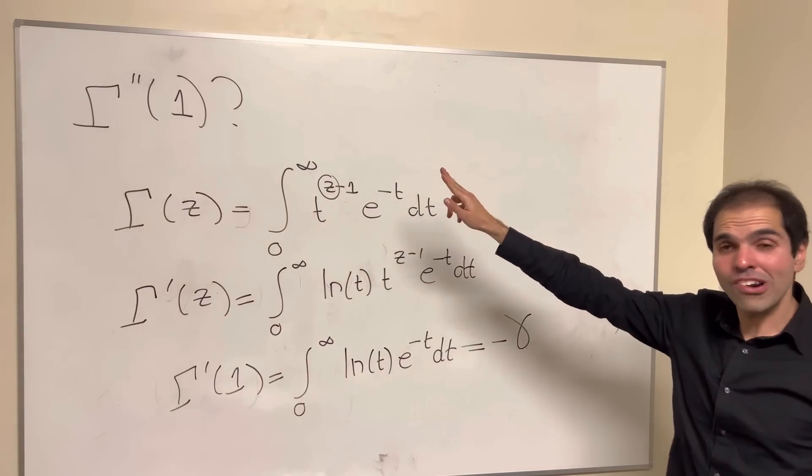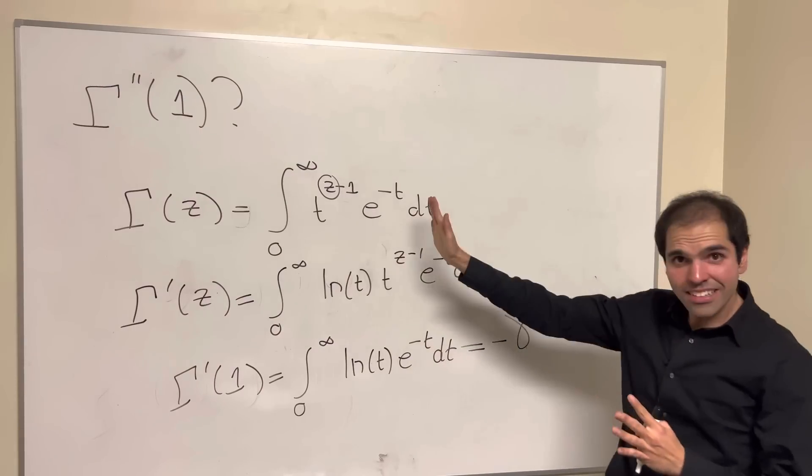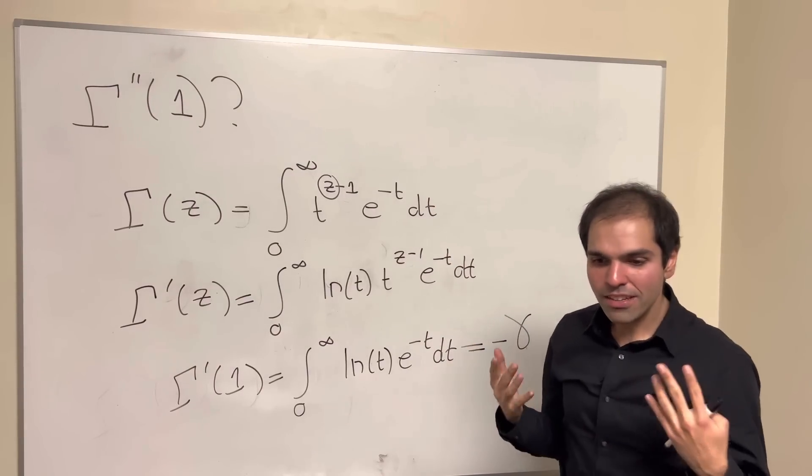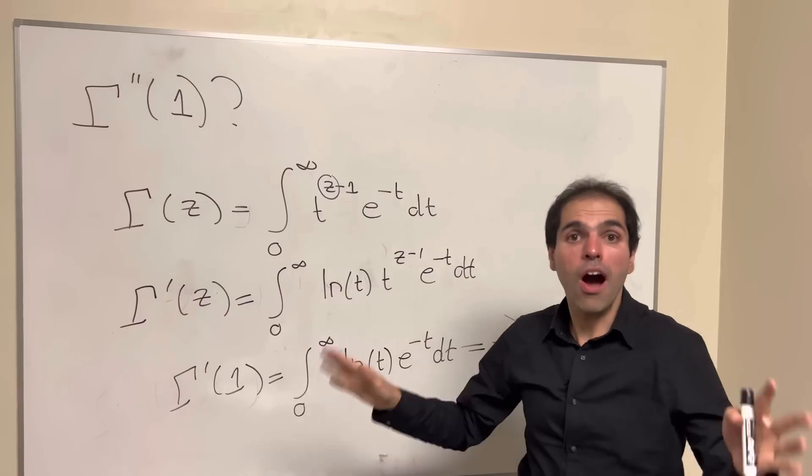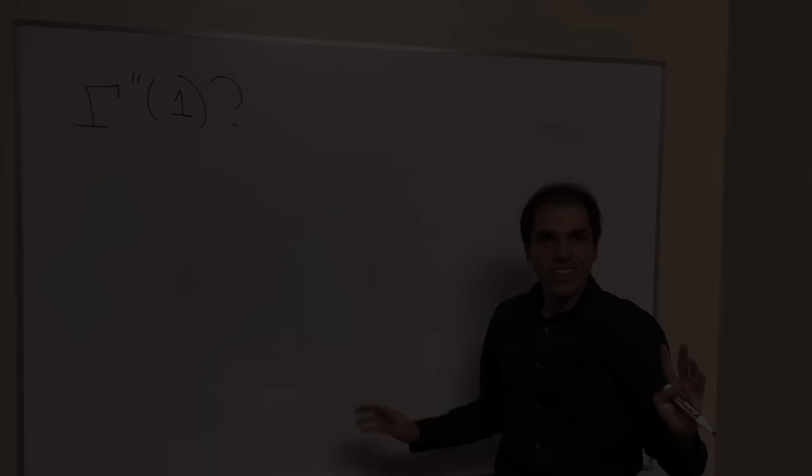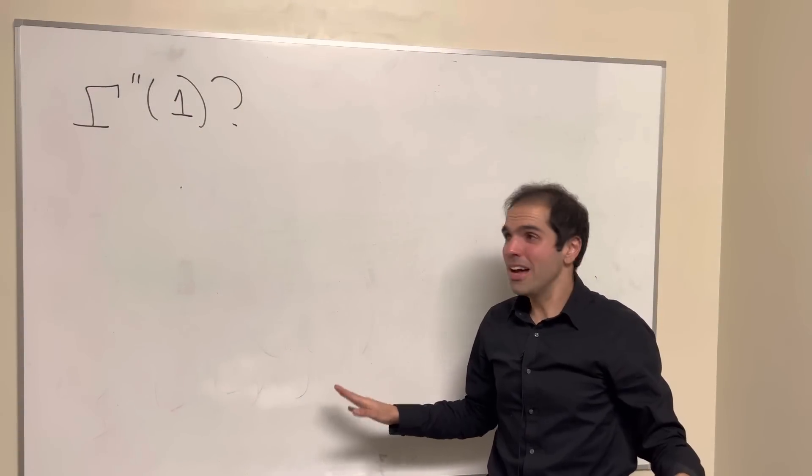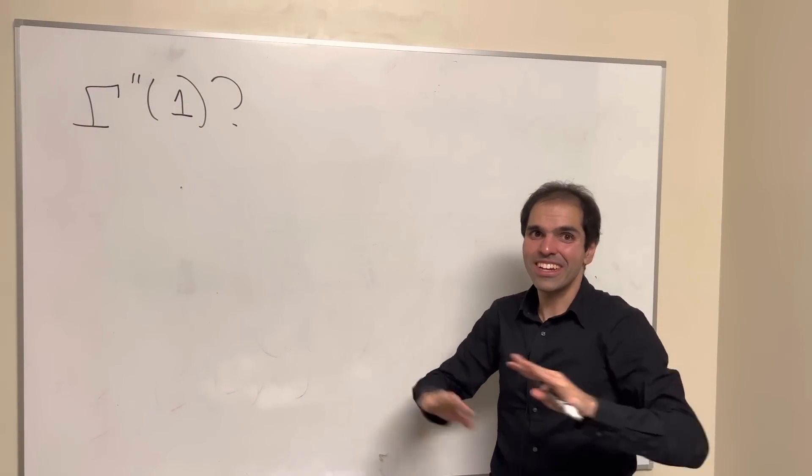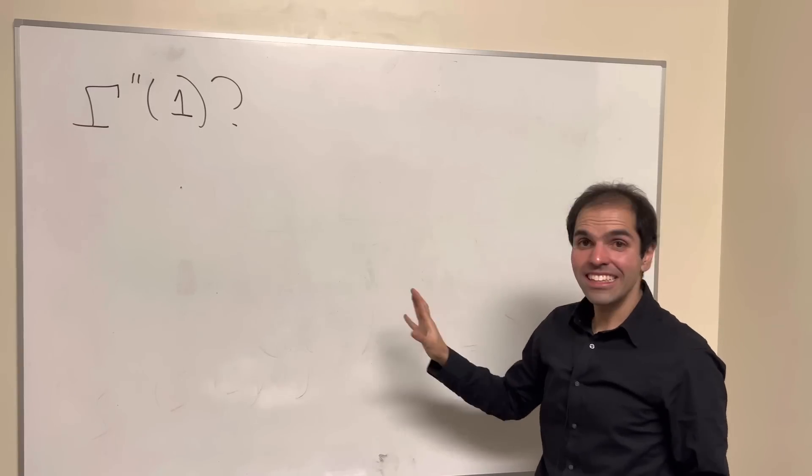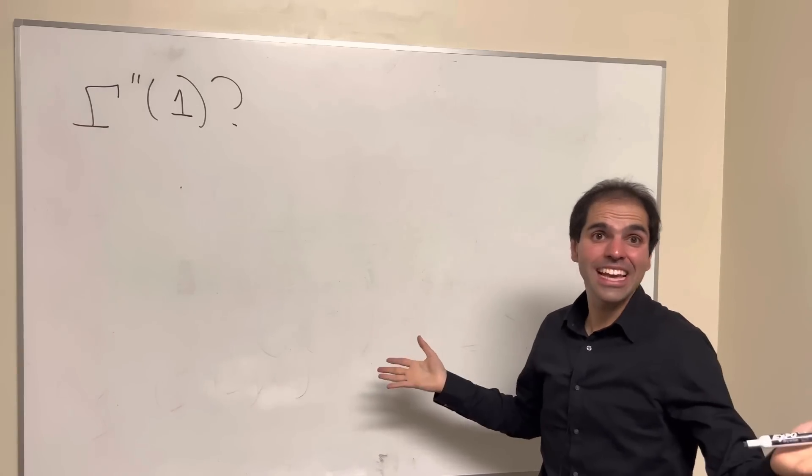But this one is even more amazing because of the result, but also the approach is slightly different, because for this we have to use the polygamma function. For gamma double prime of 1, it's quite interesting because the approach is very different. We won't really use integrals here. Instead, we'll use what's called the polygamma function, which is kind of a logarithmic derivative.